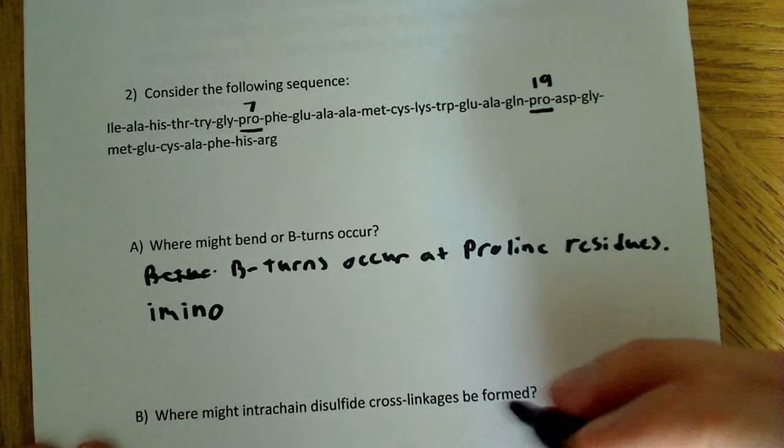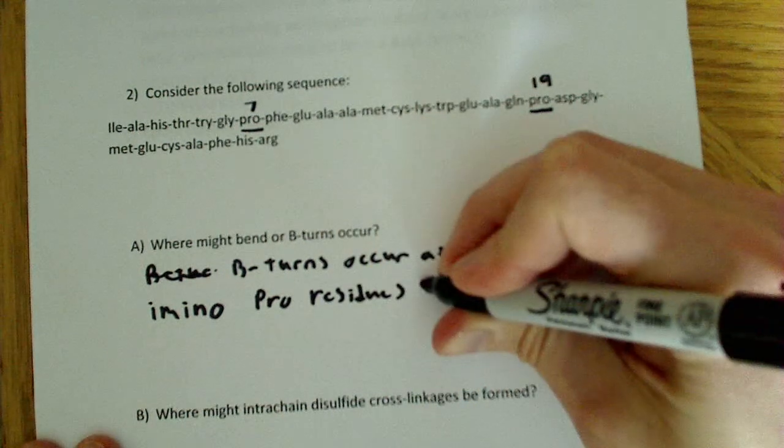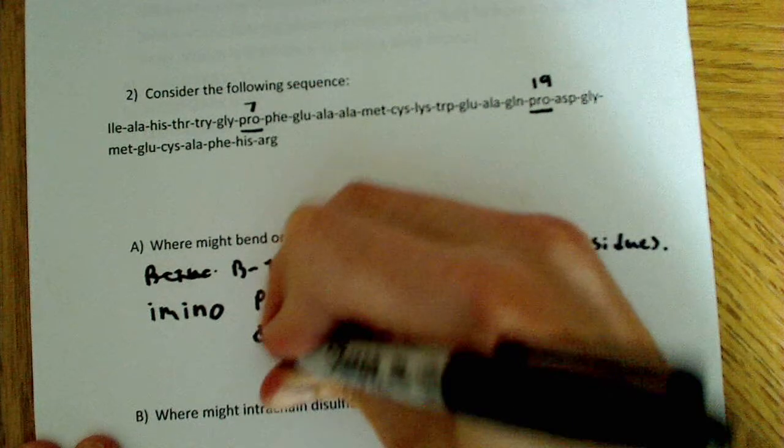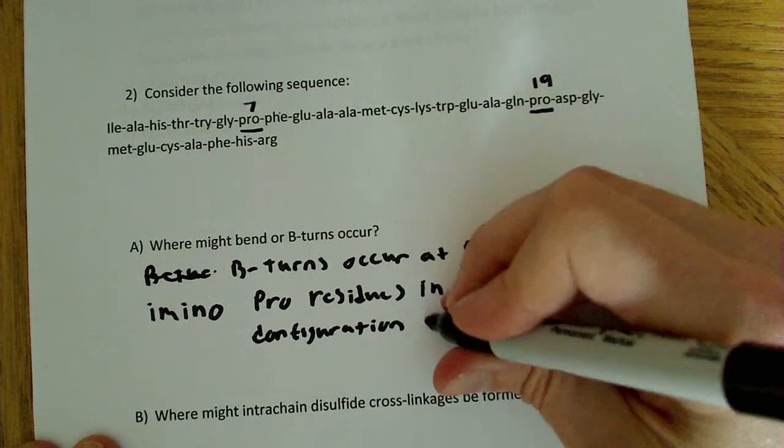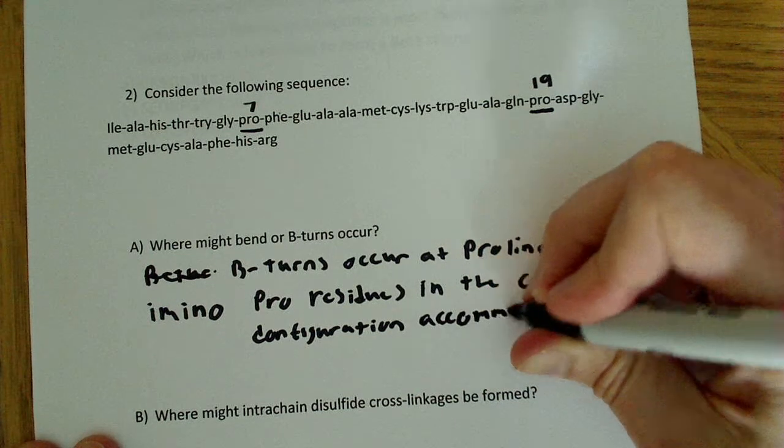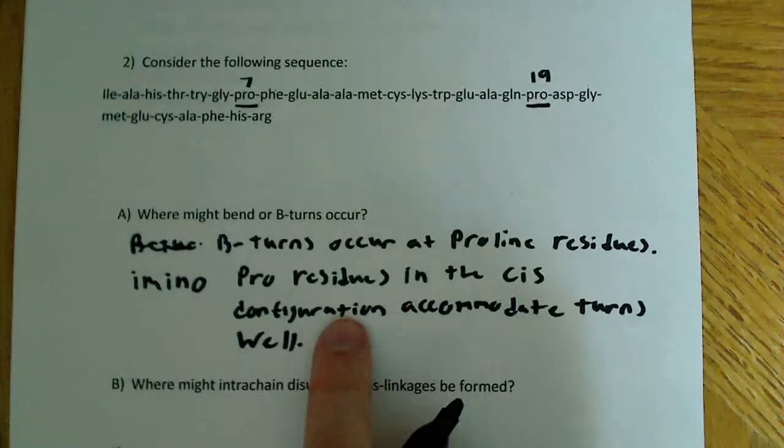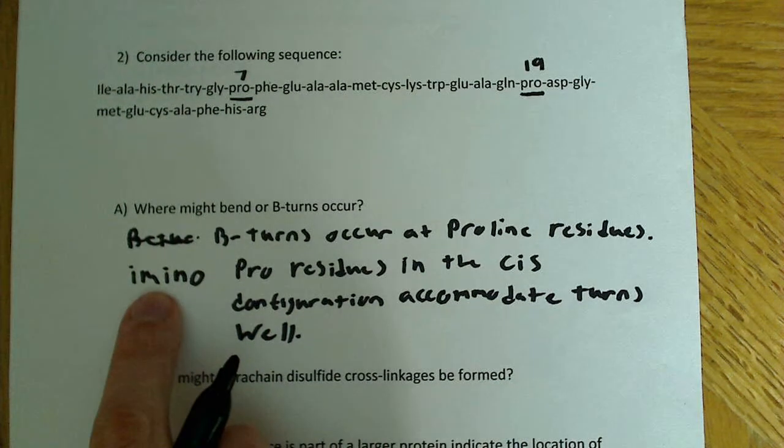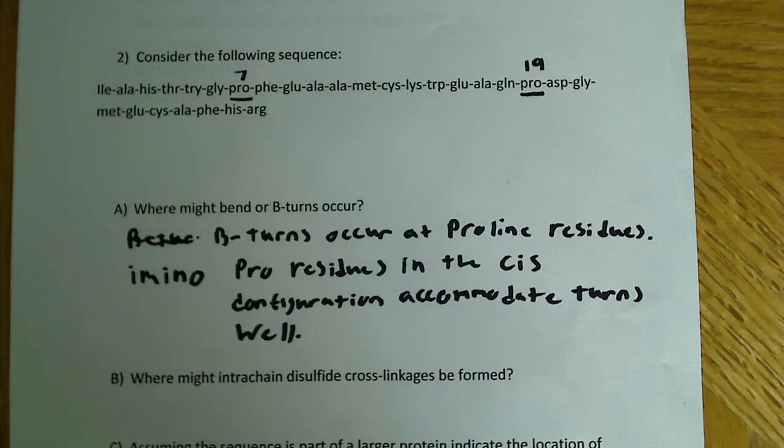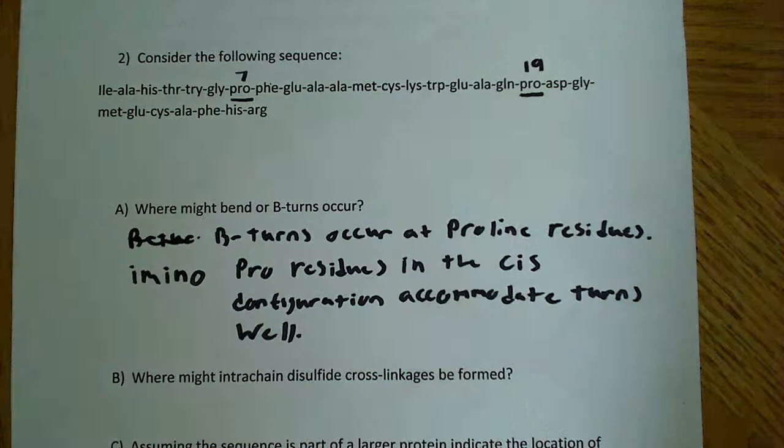So what I'll say here is that proline residues in the cis configuration accommodate turns well. And remember, I said the reason that these proline residues accommodate turns well is because peptide bonded amino groups readily assume the cis configuration. So the most likely place to see beta turns is at position 7 and position 19. That answers our first question.